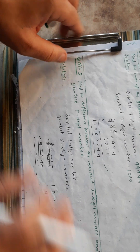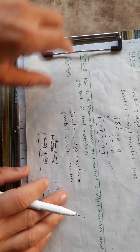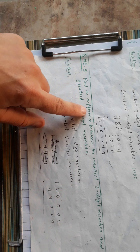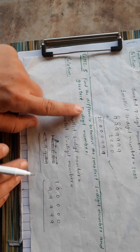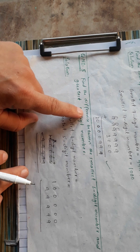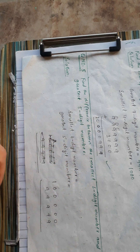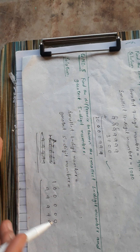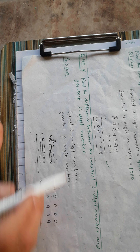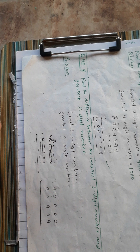Question number 5: Find the difference between the smallest six-digit number and the greatest five-digit number.